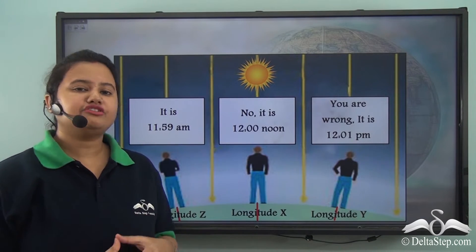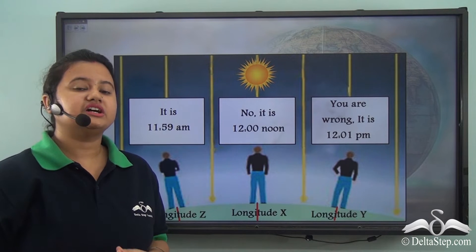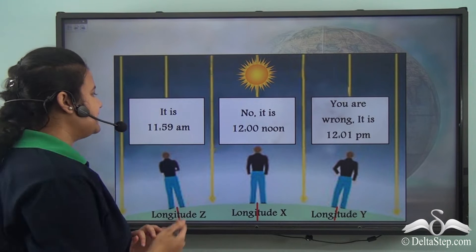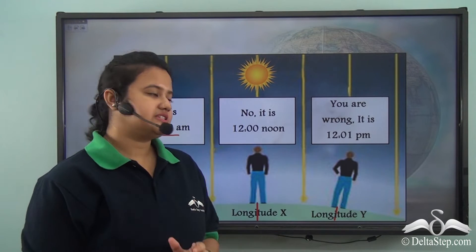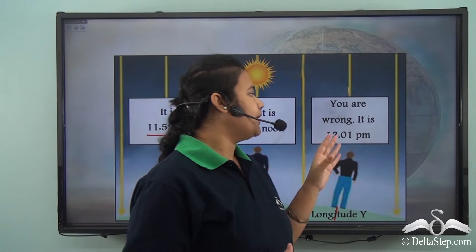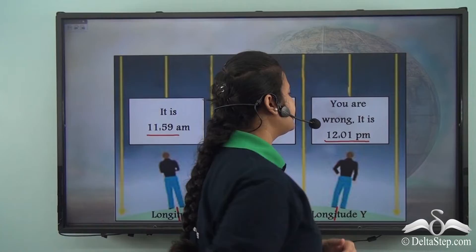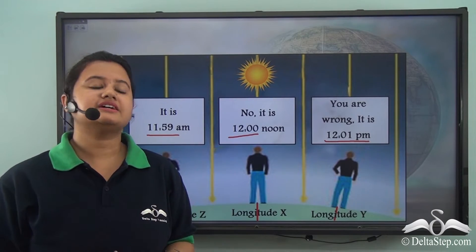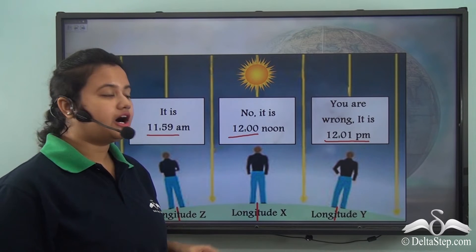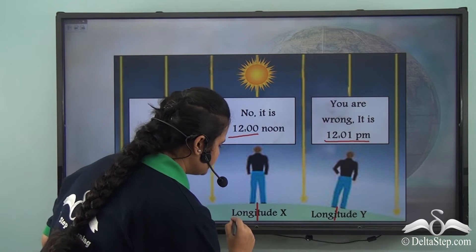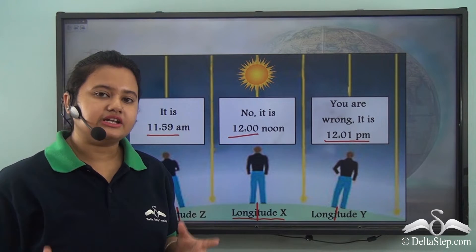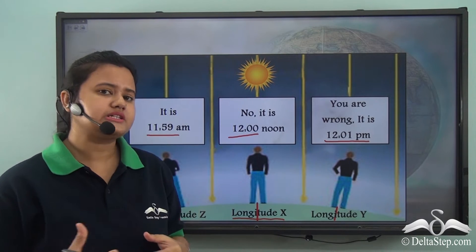In this picture, three friends are having a quarrel over the local time of their current location. One says that it's 11:59 am, the other says it's 12 noon, and the third person says it is 1 minute past 12 pm. Why is there confusion with the local time? Note that the sun is overhead a particular longitude — longitude x. Is there any relation between the sun's position and the local time of a place?